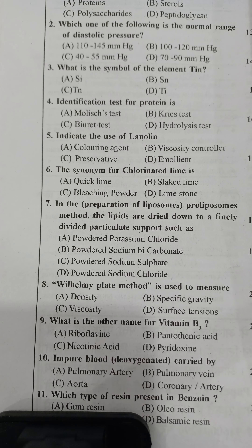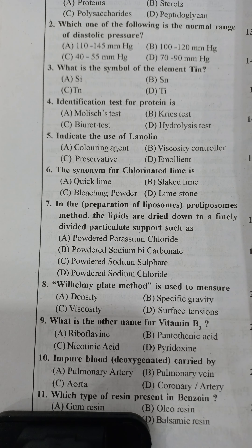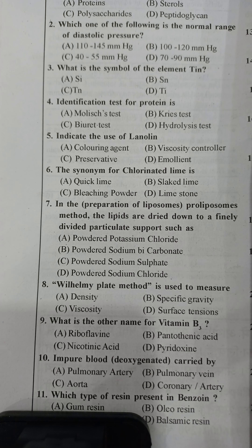What is the other name for vitamin B3? The right answer is nicotinic acid, also known as niacin. The tenth question: impure blood or deoxygenated blood is carried by — the right answer is the pulmonary artery, which carries deoxygenated blood from the right ventricle.